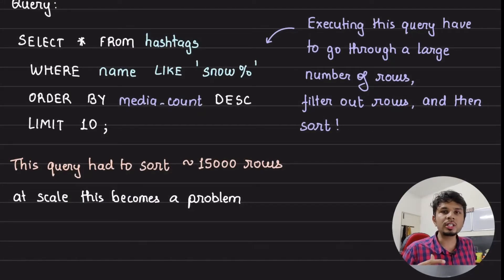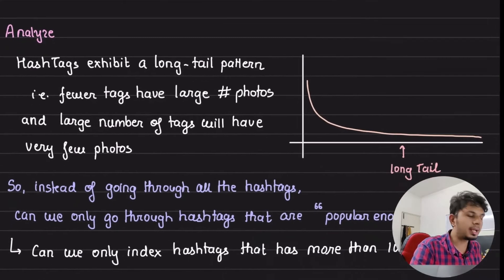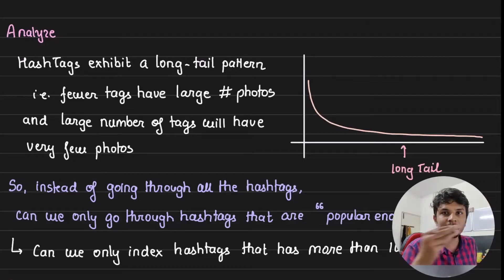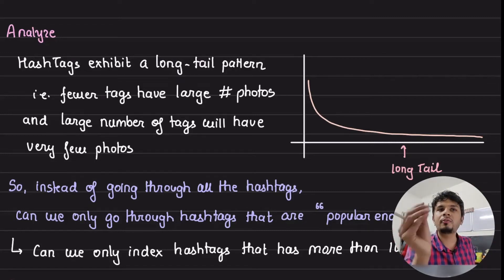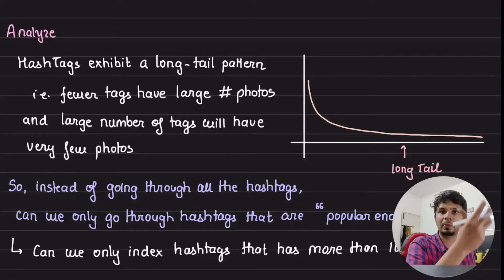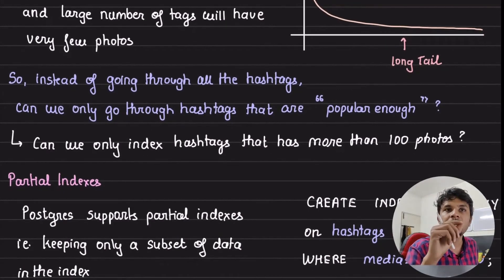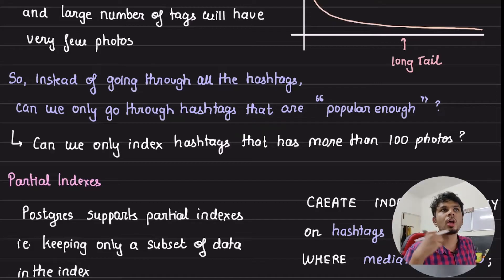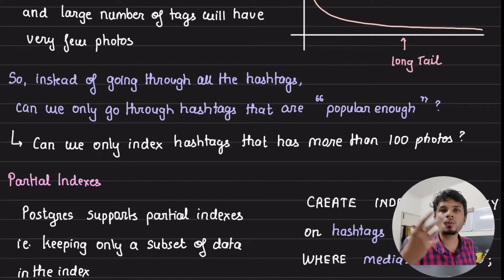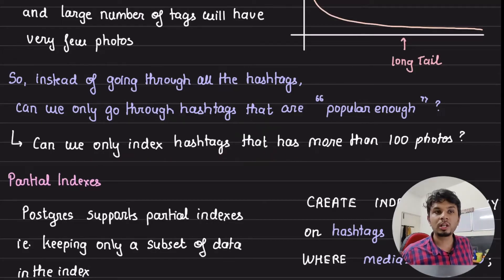To optimize, instead of just adding caching naively, they analyzed the pattern. Hashtags exhibit a long-tail pattern: fewer hashtags have large numbers of photos while the vast majority have very few. There are a handful of extremely popular tags and most have only five, ten, or a few hundred photos. Given this, can we only index hashtags that are popular enough — say, those with more than 100 photos?